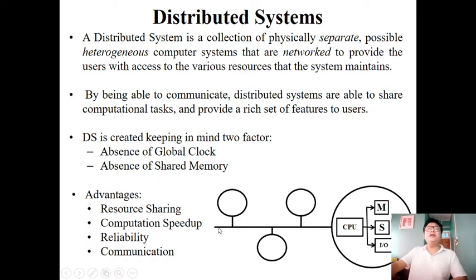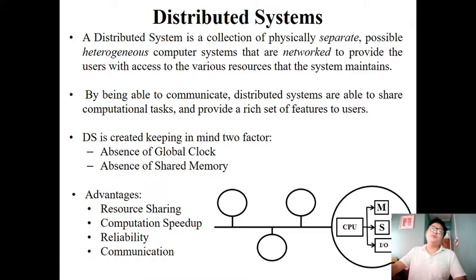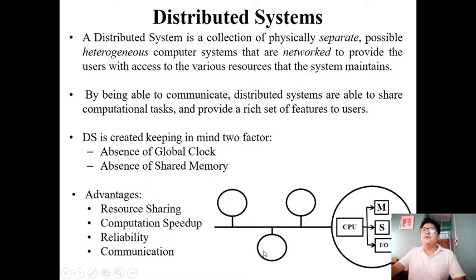Another advantage is computational speed. If a distributed system has multiple computers connected and the user program has hundreds of subroutines, executing them on a single system requires one after another. In a distributed system, function one can execute on one system, function two on another, and so on — distributing execution of different subroutines across different computers, provided those subroutines are independent of each other.